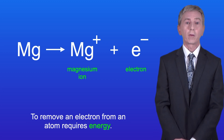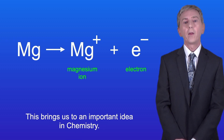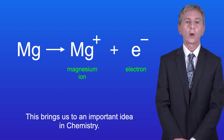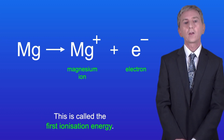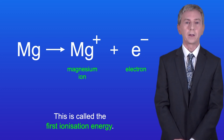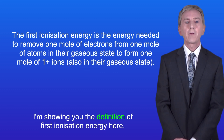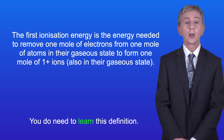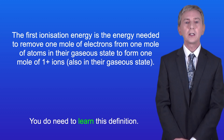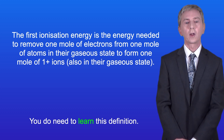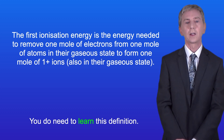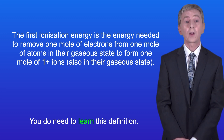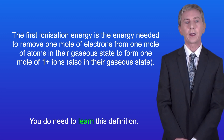Now to remove an electron from an atom requires energy, and this brings us to an important idea in chemistry — called the first ionization energy. The first ionization energy is the energy needed to remove one mole of electrons from one mole of atoms in their gaseous state to form one mole of ions also in their gaseous state.